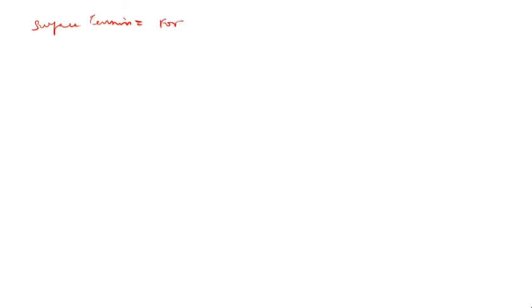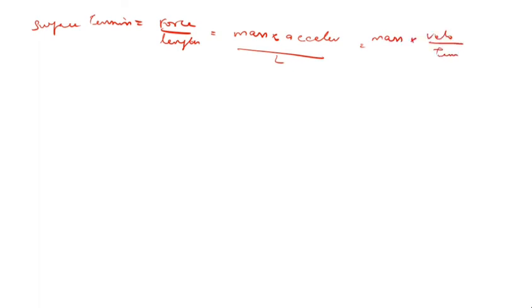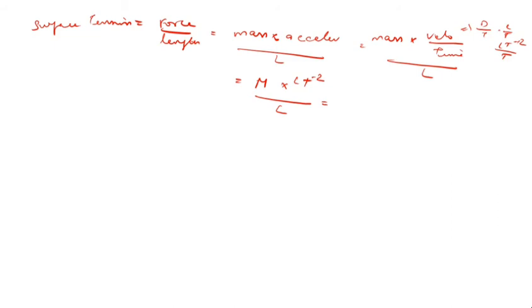Surface tension. What is surface tension? Surface tension is equal to force by length. Force equals mass into acceleration, which is MLT⁻². So MLT⁻² divided by L — the L cancels — giving MT⁻². Surface tension equals MT⁻².